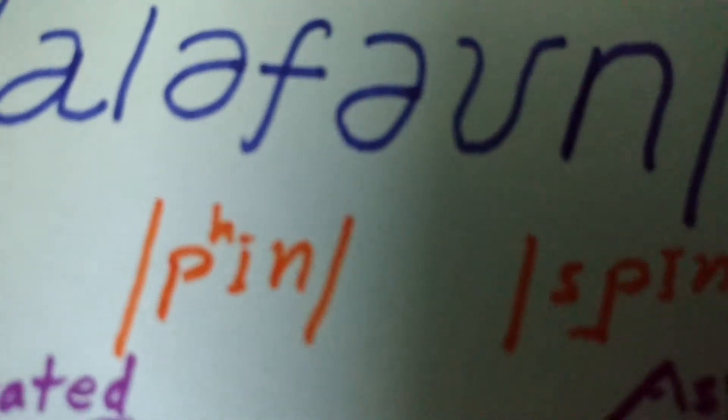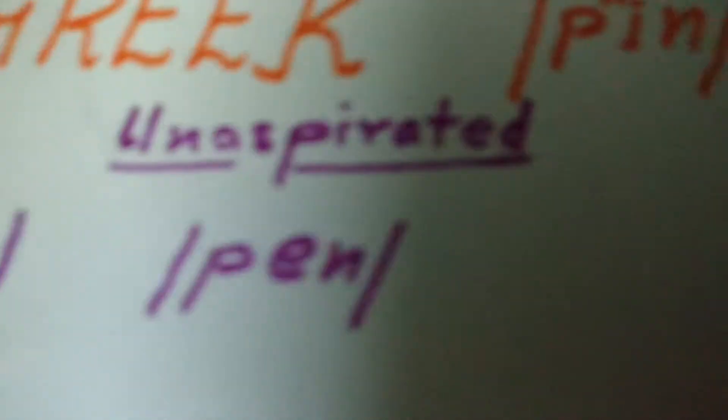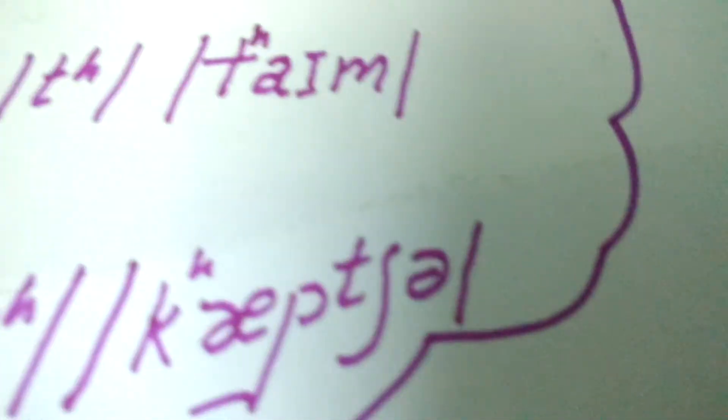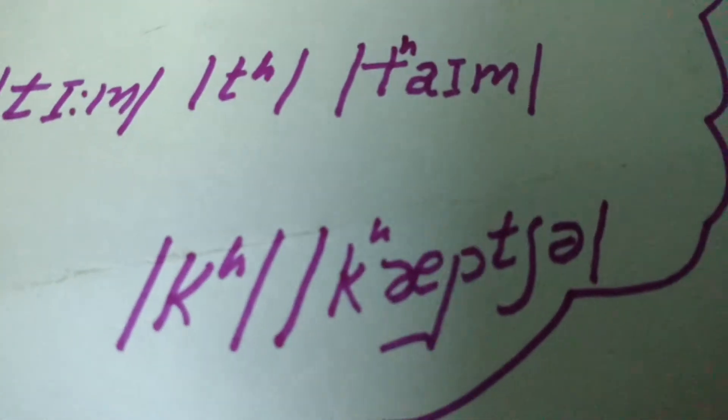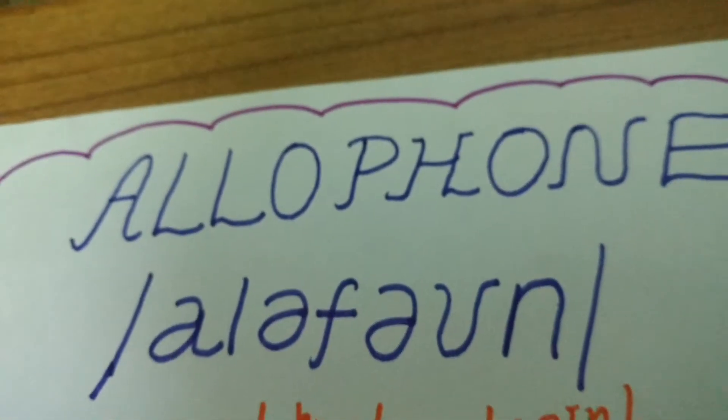For example, compare 'pin' and 'spin,' and also 'pen' and 'please.' Similarly, 'team' and 'time,' and 'kin' and 'capture.' In 'pin,' 'team,' and 'kin,' the initial consonants are aspirated, while in 'spin,' 'steam,' and 'skip,' they are unaspirated. Such variations are known as allophonic variation. This is how allomorph is different from allophone.